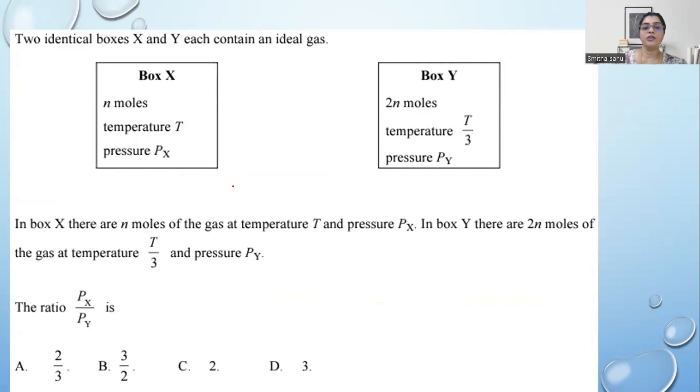Now in conditions where you are given something like this, you have to look for what is that which is not changing in the equation. See here, number of moles are changing, temperature is changing. We want the answer for Px over Py. What is same in this is the identical boxes, which means the volume of x equals volume of y. Let us start with the assumption Px equals V. On rearranging, we get nxRTx over Px equals nyRTy over Py. Now, the number of moles on the y side is 2n, temperature is T by 3. Substituting, you get Px over Py is nothing but 2/3. So the answer is B.